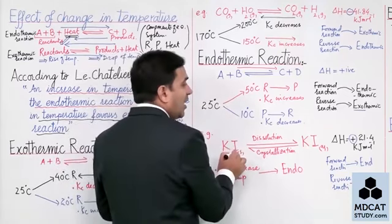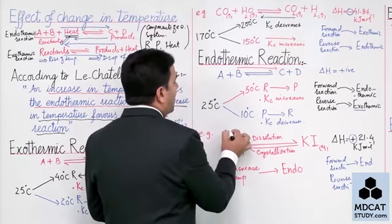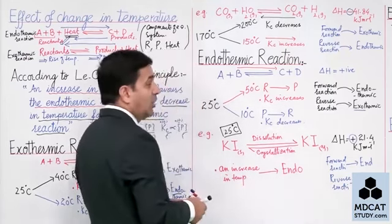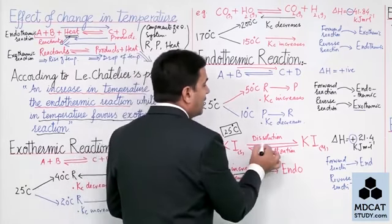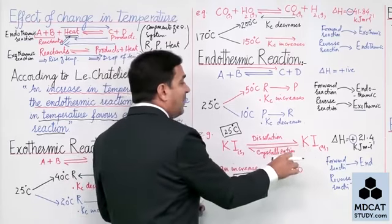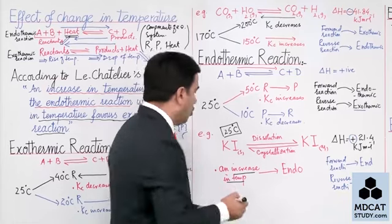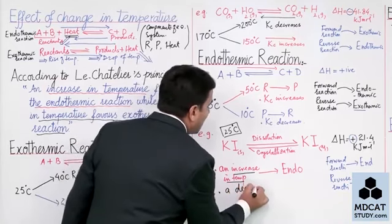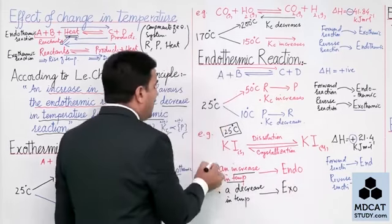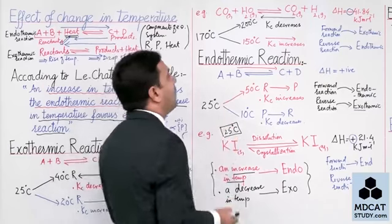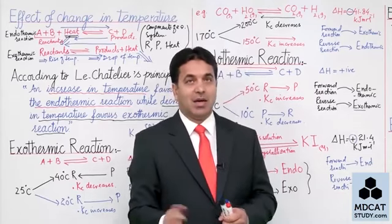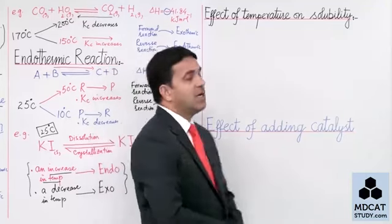If you dissolve at 25 degrees room temperature, and then increase temperature — since forward is endothermic, increase in temperature favors it, so reaction goes forward, dissolution increases and solubility increases. If temperature decreases, reaction reverses and crystallization occurs, decreasing solubility. So the effect of temperature on solubility: increase in temperature increases solubility for endothermic dissolution, and decrease in temperature favors exothermic reaction.